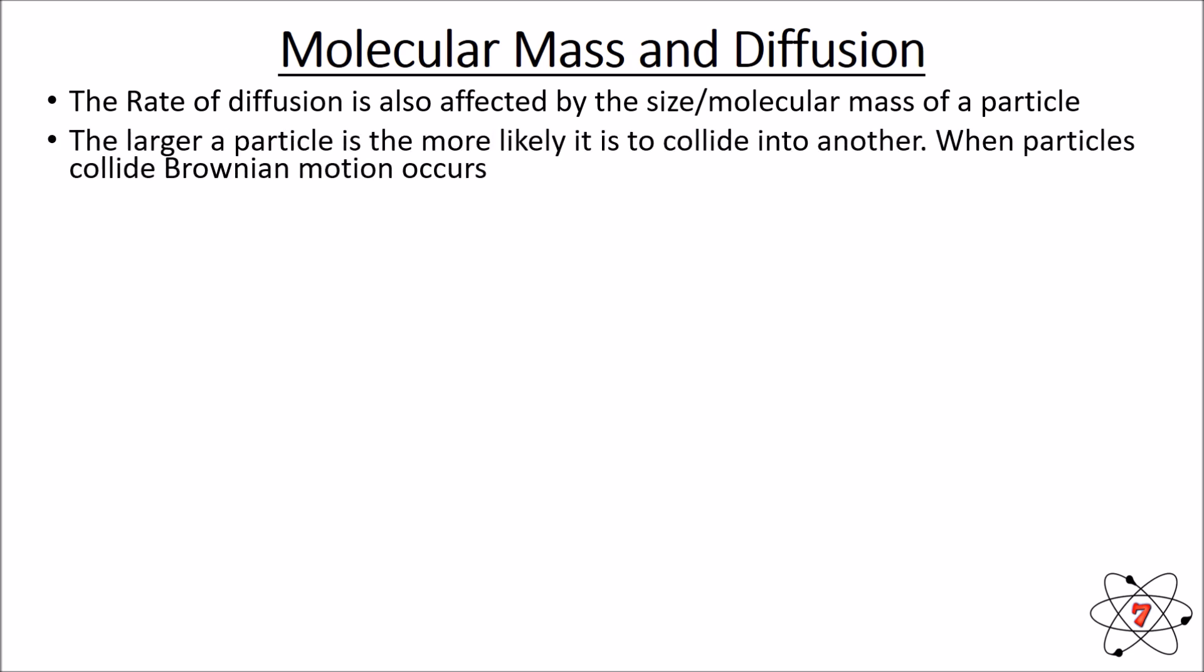So the larger a particle is, the more likely it is to collide with another. So when particles collide, Brownian motion occurs. If particles collide more, then it's going to have its path changed and it's going to diffuse more slowly.